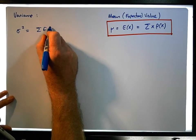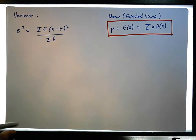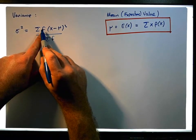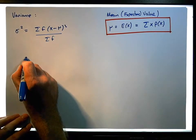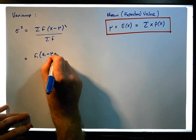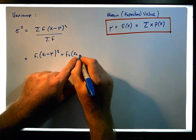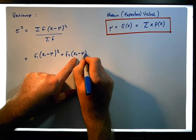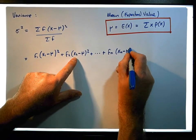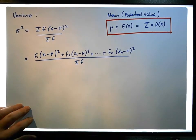The variance is equal to the sum of the frequencies times x minus mu squared, all over the sum of the frequencies. If we expand this term out and iterate across all discrete observations, this becomes f1 times the first observation minus the mean squared, plus f2 times the second observation minus the mean squared, all the way through to fn times the nth observation minus the mean squared, all over the sum of the frequencies.